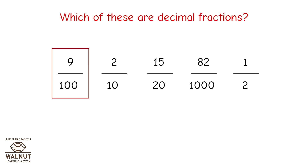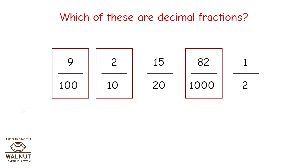This denominator is 100, so it is a decimal fraction. Denominator 10 is a decimal fraction. Denominator 20 is not a decimal fraction. Denominator 1000 is a decimal fraction. Denominator 2 is not a decimal fraction.